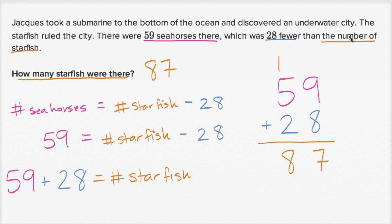You should always see if that makes sense. The number of starfish is 87. So if there were 59 seahorses, is that 28 fewer than 87? Sure it is. It's exactly 28 fewer. In fact, that's what we used to solve this question.